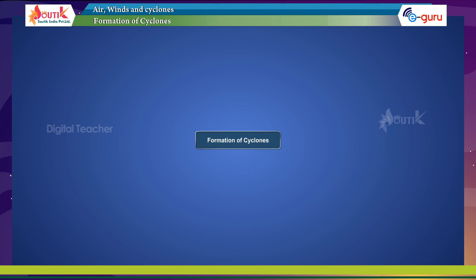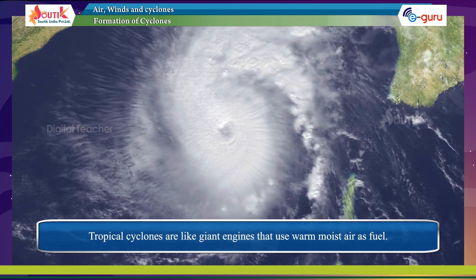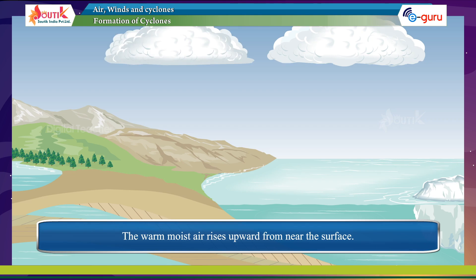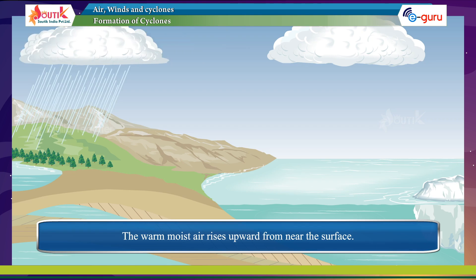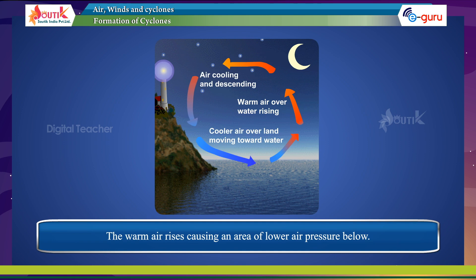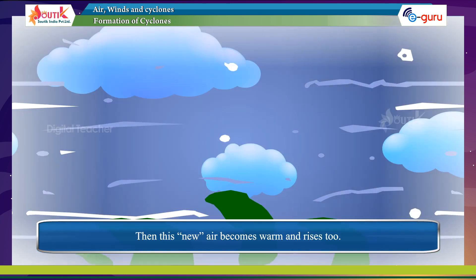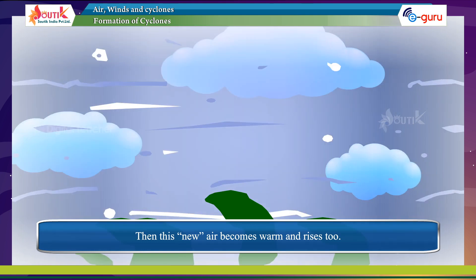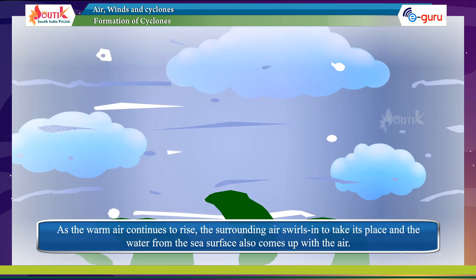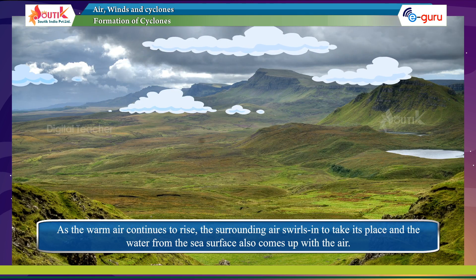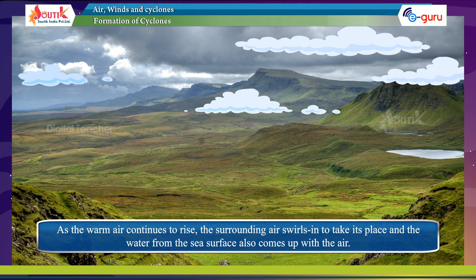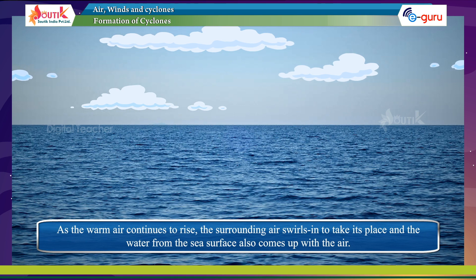Tropical cyclones are like giant engines that use warm moist air as fuel. The warm moist air rises upward from near the surface, causing an area of lower air pressure below. Air from surrounding areas of high air pressure pushes into the low pressure area. This new air becomes warm and rises too. As the warm air continues to rise, the surrounding air swells in to take its place and the water from the sea surface also comes up with the air.